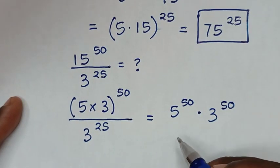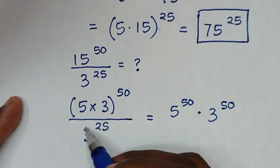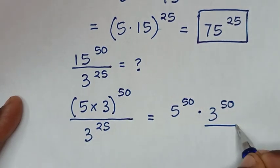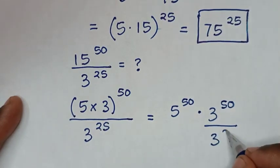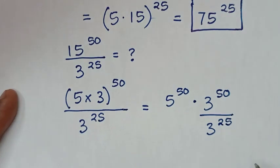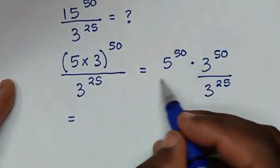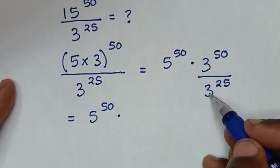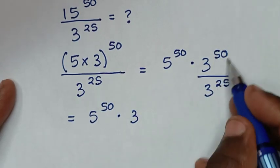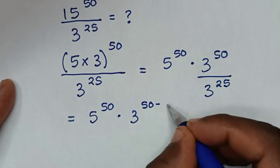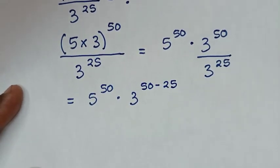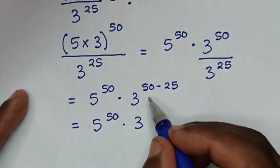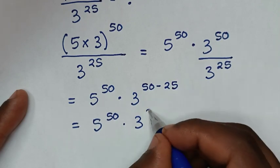We divide using the exponent with base of 3 — specifically 3 power of 25 — because they have the same base of 3. Then it will be equal to 5 power of 50 times 3 power of 50 minus 25, since when dividing same bases we subtract the exponents: 50 minus 25 equals 25. So we have 5 power of 50 times 3 power of 25.